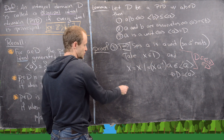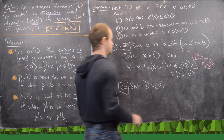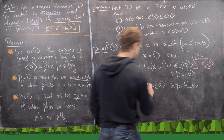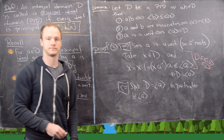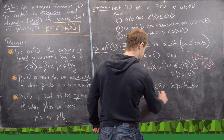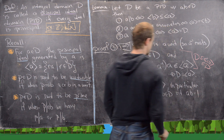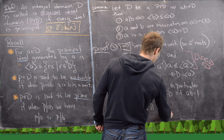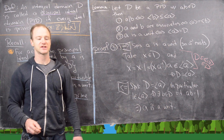For the other direction, suppose ⟨A⟩ equals D. Since D contains the element 1, we know 1 is in ⟨A⟩, which means 1 equals A times B for some B in D. But that's exactly what it takes for A to be a unit — we found the inverse, we just called it B. This finishes the proof of the lemma.